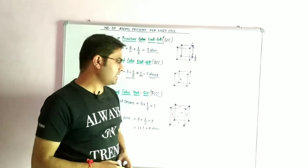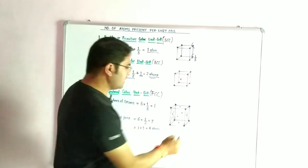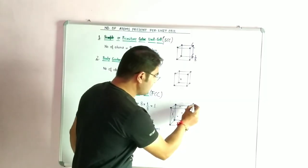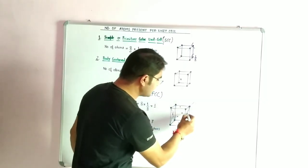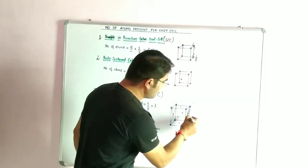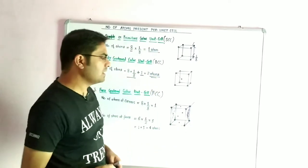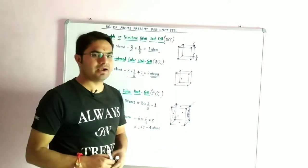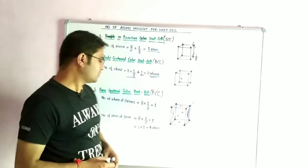Now the important point is the contribution of one face. We say that half of the portion of an atom at a face center is acquired by one unit cell, so the contribution of one face-centered atom is one-half.